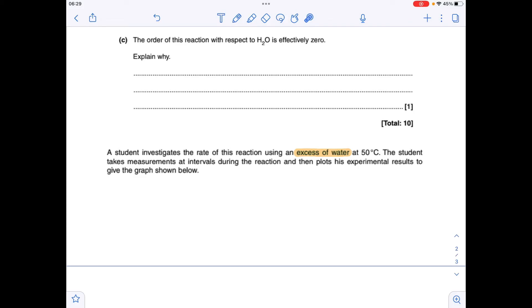And finally part C: the order of reaction with respect to H2O is effectively 0. We've got to explain why. Well it's down to something mentioned at the very start of the question. We're told that the water's in excess. So when you've got one of your reactants in excess, changing its concentration won't have any effect on the rate.